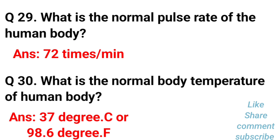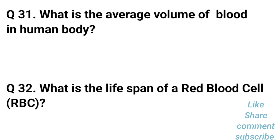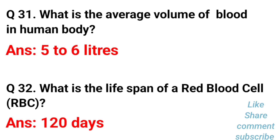What is the normal pulse rate of the human body? The normal pulse rate is 72 times per minute. What is the normal body temperature? The normal body temperature is 37 degrees Celsius, or 98.6 degrees Fahrenheit.